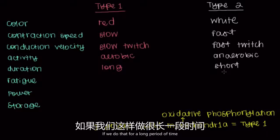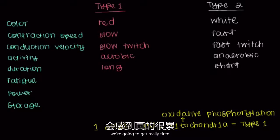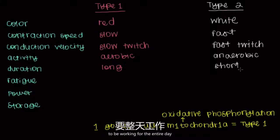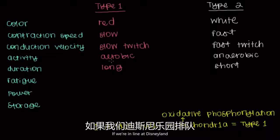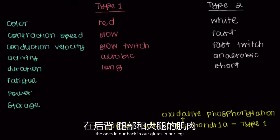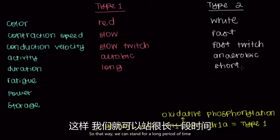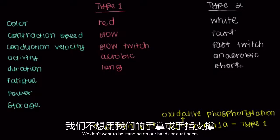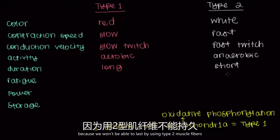If we do short duration contractions for a long period of time, we're going to get really tired — those muscle fibers aren't meant to work all day. If we're standing in line at Disneyland, we want to be using our long duration muscle fibers — the ones in our back, glutes, and legs. We won't last by using type 2 muscle fibers.